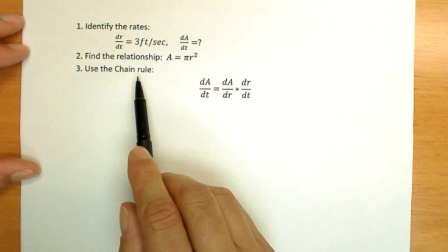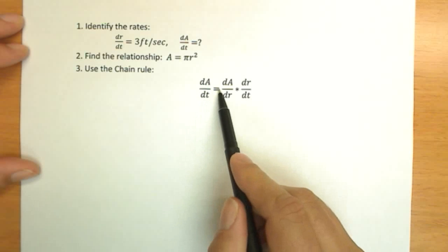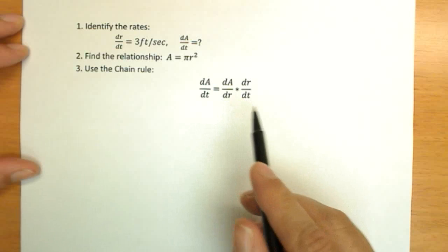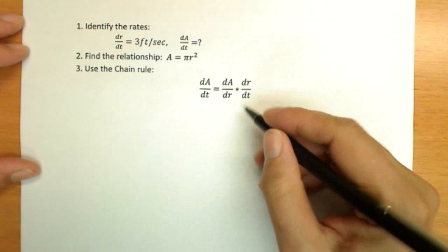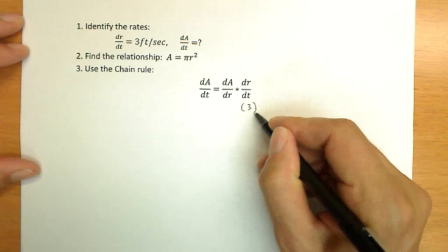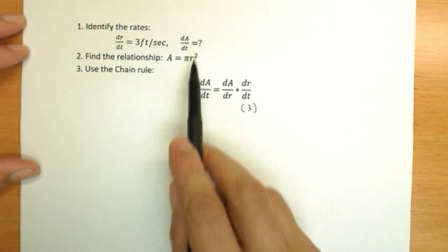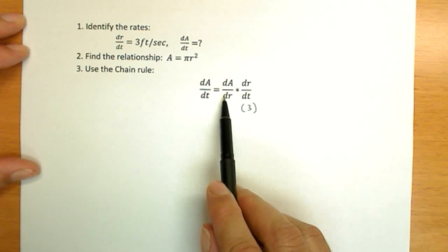And now we're going to use that new version of the chain rule. dA/dt equals dA/dr times dr/dt. So we notice dr/dt, we know. I can put a 3 here. dA/dr, okay, I don't know that. And dA/dt, that's what I'm supposed to find.